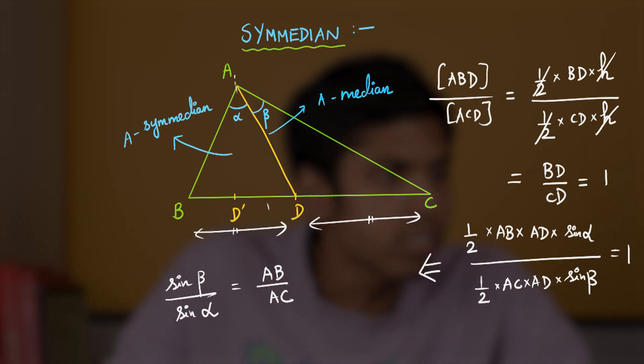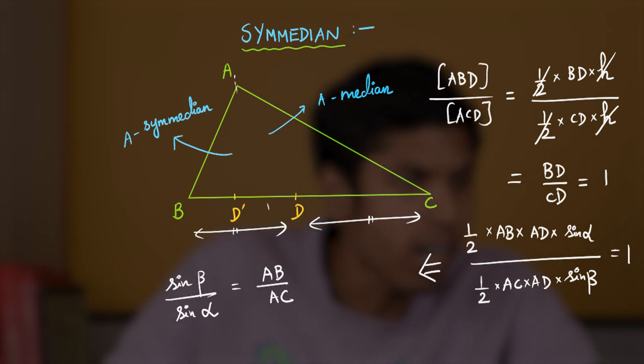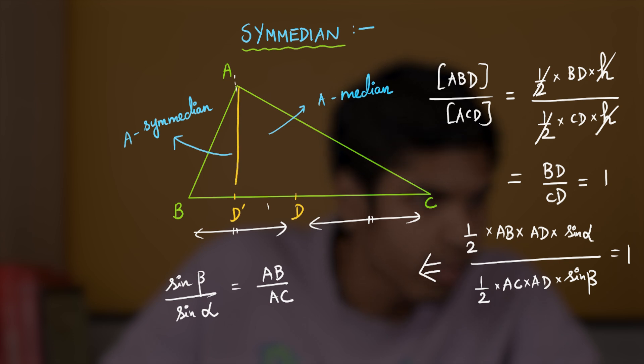This is equal to 1 and this implies that AB by AC equals sine beta by sine alpha. But, if I consider the C-median, the angles subtended are in the other way. Now, this will be alpha and this will be beta.